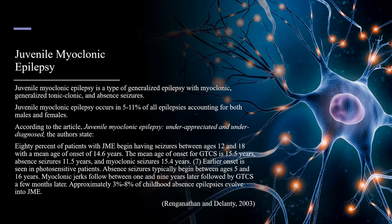The mean age of onset for generalized tonic-clonic seizures is 15.5 years, absence seizures 11.5 years, and myoclonic seizures 15.4 years. Earlier onset is seen in photosensitive patients. Absent seizures typically begin between ages 5 and 16 years. Myoclonic jerks follow between 1 and 9 years later, followed by generalized tonic-clonic seizures a few months later. Approximately 3-8% of childhood absent epilepsies evolve into juvenile myoclonic epilepsy.